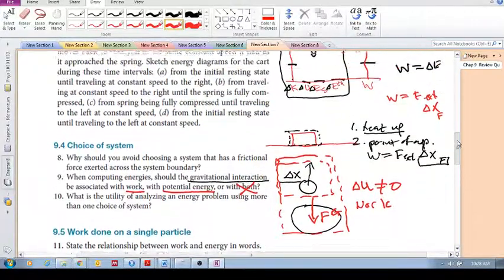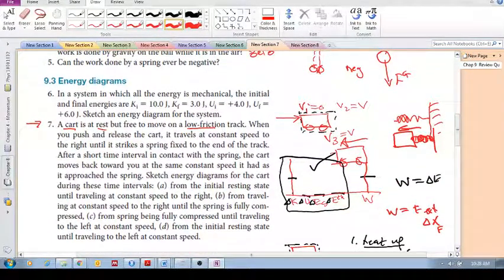It's a similar example to earlier, when we had the cart smashing against the spring. Because the spring was not included inside the system, there was no change in potential energy of the system. The spring was considered an external force. However, if we included the spring inside the system, then the spring is no longer applying an external force. The potential energy of the spring is changing.